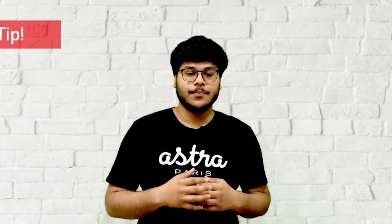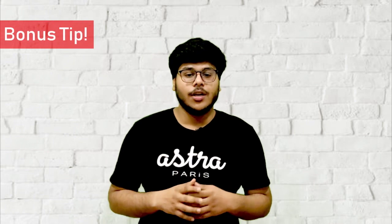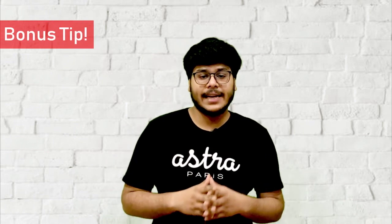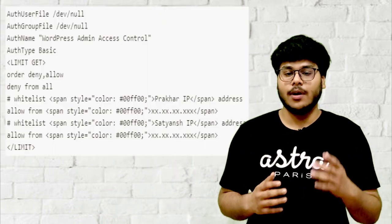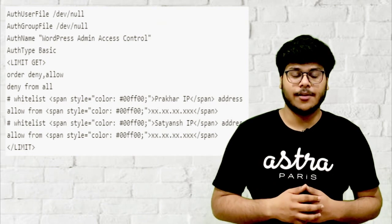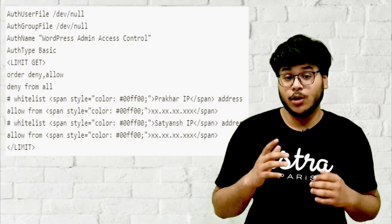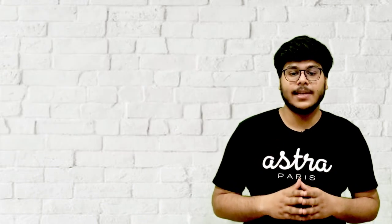And this brings me to the bonus tip. You can simply whitelist your trusted IPs by adding this code to your htaccess file. Don't forget to replace this with the original IP — and that's it.